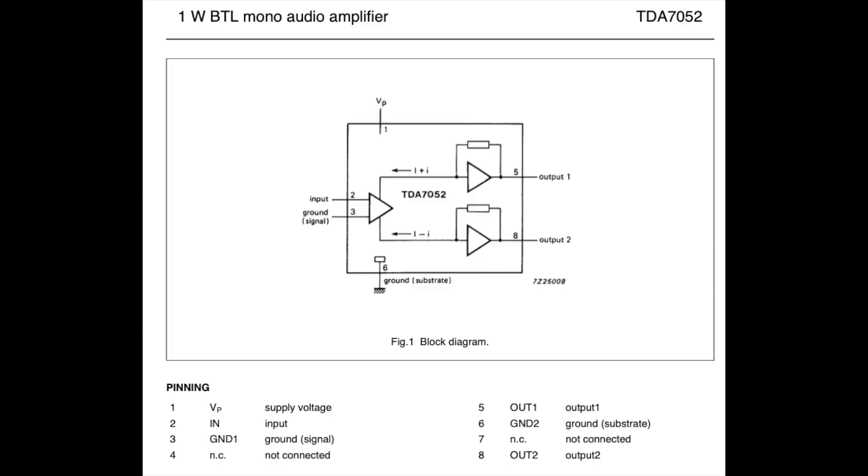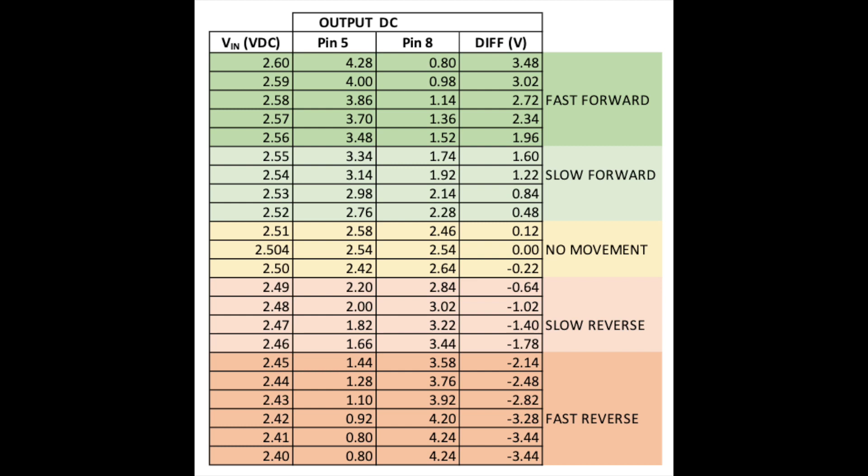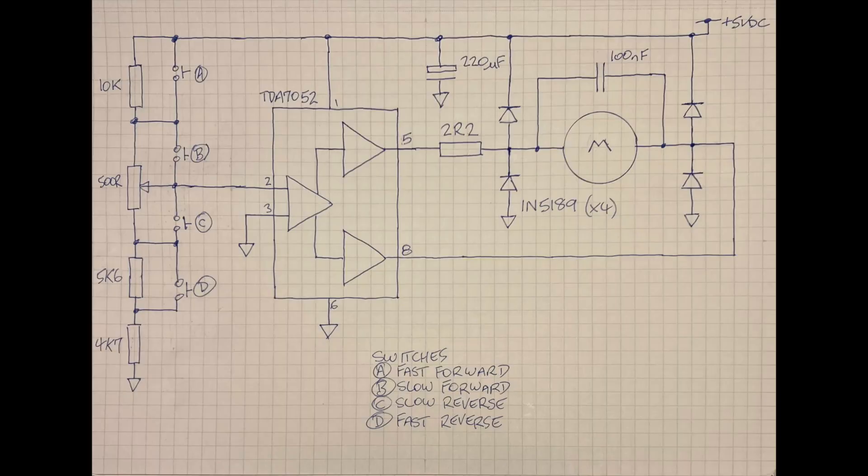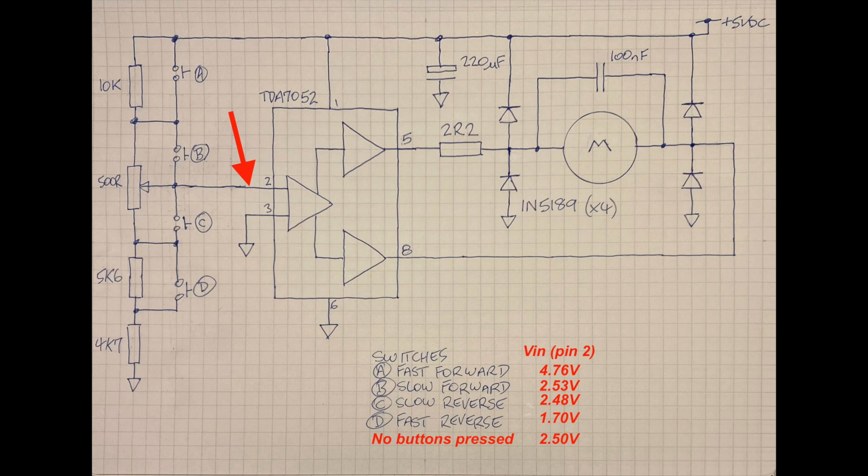Now, the TDA7052 chip is very basic. It has a bridged output and a single input. Through experimentation of varying the voltage on the input through a potentiometer, I discovered the range of voltages which provided a good bridged output, reversing the voltage applied to the motor and also the amplitude of that voltage. In this circuit diagram, I've arranged it so that the input is set to one of four voltages, and that provides fast forward, slow forward, slow reverse, and fast reverse.